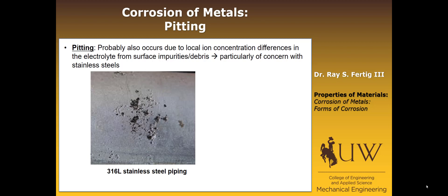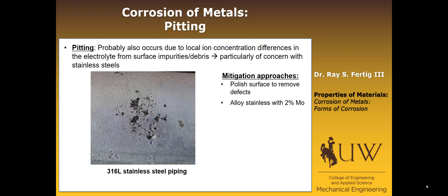Like crevice corrosion, another phenomenon is called pitting. It's believed to occur due to local ion concentration differences within the electrolyte, but in this case from surface impurities and debris. It's particularly of concern with stainless steels — what you're looking at here is pitting on a 316L stainless steel pipe. Mitigation approaches include polishing the surface to remove defects, and it's also been found that alloying the stainless with 2% molybdenum helps to mitigate pitting corrosion.